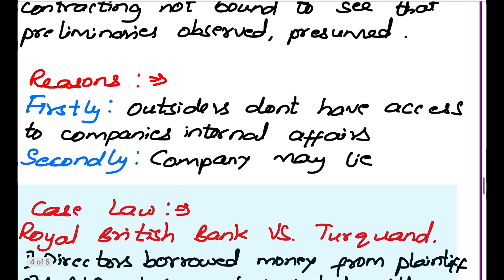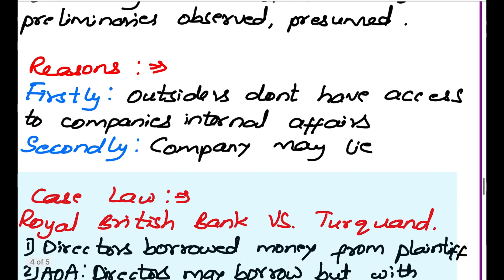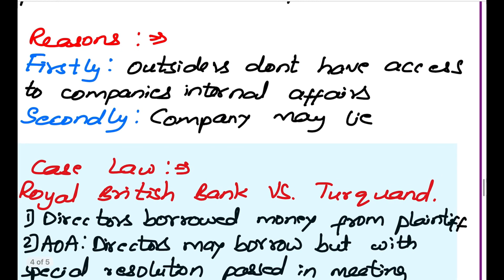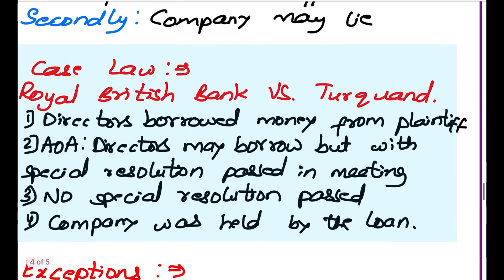The reasons for the Doctrine of Indoor Management: First, outsiders don't have access to the company's internal affairs. The director has to perform internal tasks in the company, and the outsider does not have permission to enter the company's office, so he cannot verify whether the director has fulfilled that condition. Second, the company may lie — even if the director has performed the obligation, he may falsely claim to the outsider that he has not. That's why the Doctrine of Indoor Management exists.